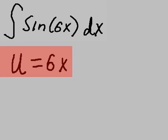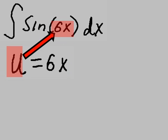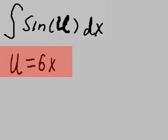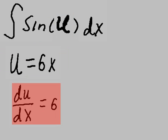U equals 6x. I'm going to take the U and substitute it where the 6x is. So we have U equals 6x. Next I take the derivative of 6x, du dx equals 6.